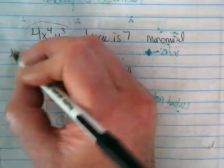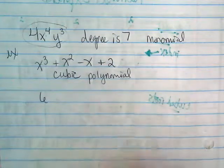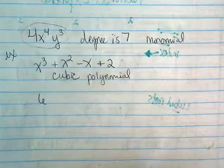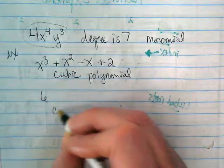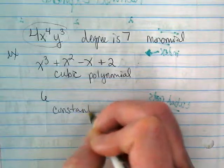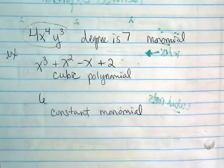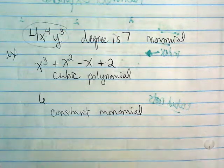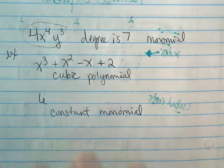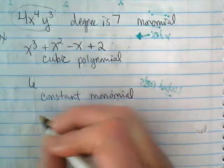What if I have the example six? Constant. Constant monomial. Can you imagine if we tried to teach that to kindergartners when they were learning their numbers? It's not just six, it's a constant monomial.